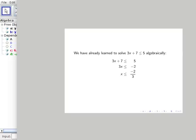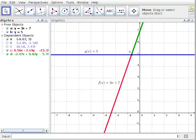Now let's consider that same situation but from a graphical standpoint. If we graph f(x) = 3x + 7 and g(x) = 5, then those two functions intersect at this point A. And it's clear that this red part of 3x + 7 is less than the function g(x). The green part is greater than.